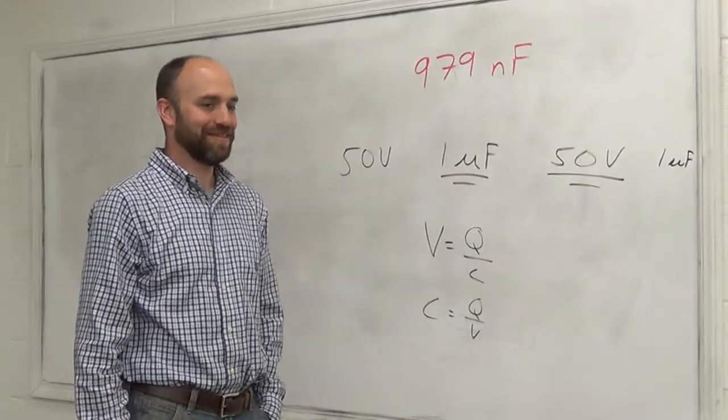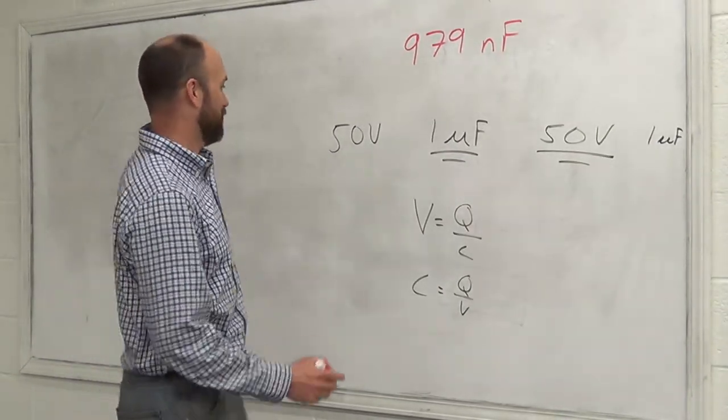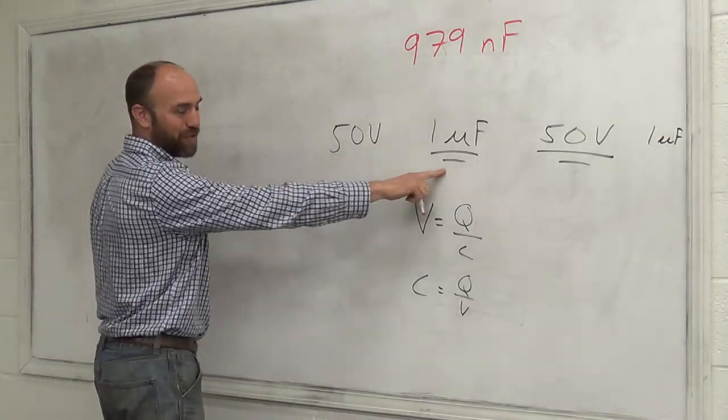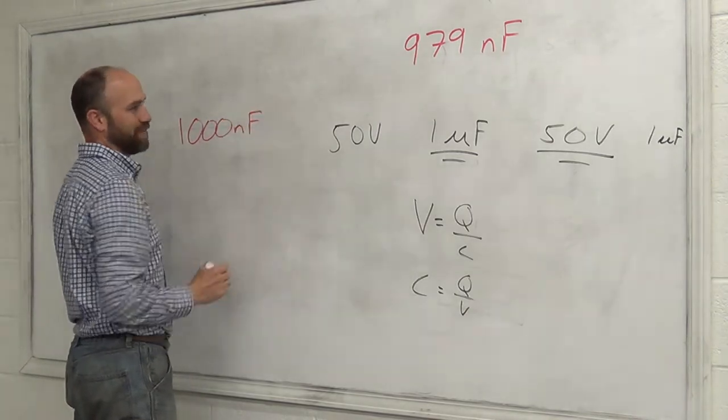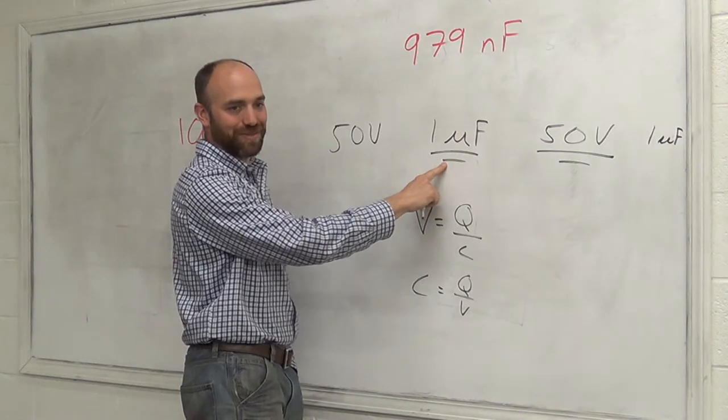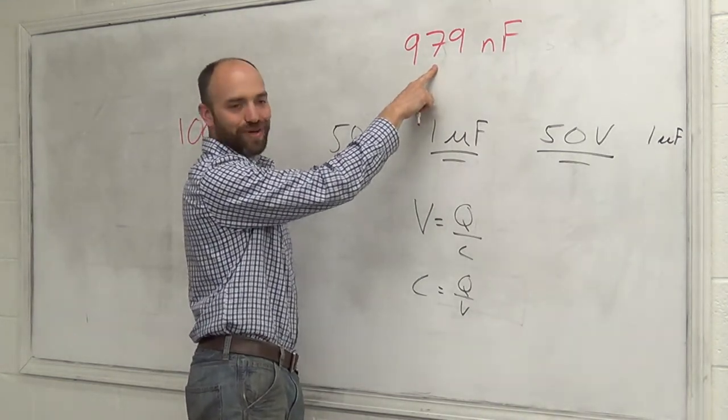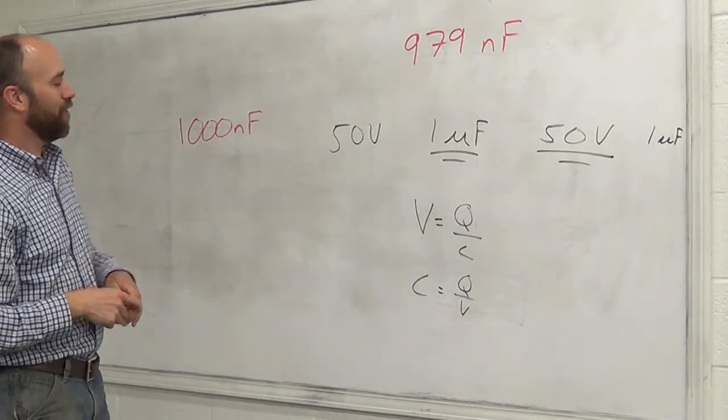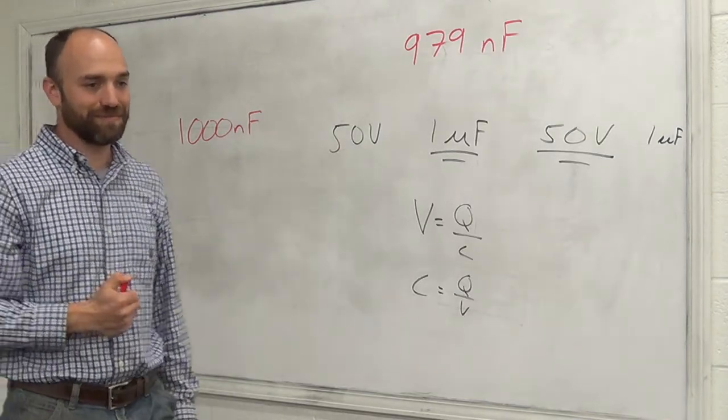N F. Okay, so let me write that on the board. Its actual is 979 N F. What's the N stand for? It's a nano. So if we're to convert this to nanofarads, this is one thousand nanofarads. So the name says one thousand nanofarads, but when we measure it, it's 980 nanofarads. So yeah, it pretty much is one microfarad, pretty close.